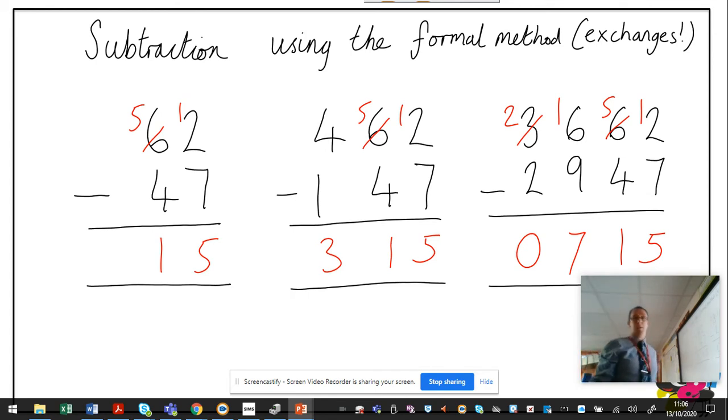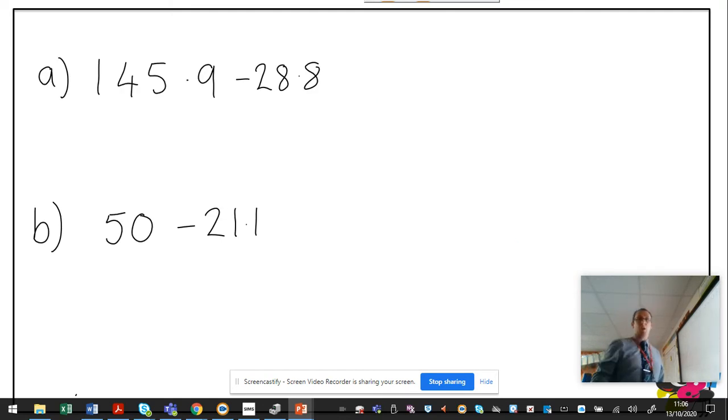So it's important that we put it in if there is another column. So on to decimals. Why are these a little bit more tricky? Because they are. It's because sometimes, like the question A, we've got four digits in one of the numbers and we've got three digits in the other number. So it's just about lining them up, and that's the awkwardness. Because they're written horizontally, and it's up to you to put it into a column.